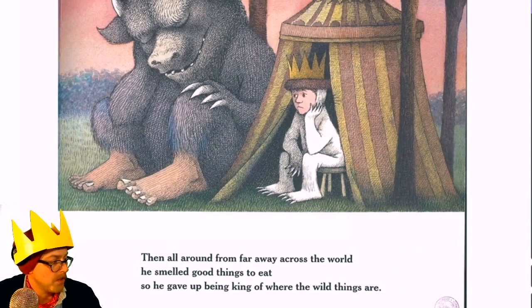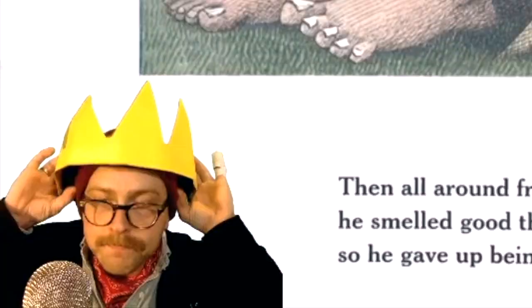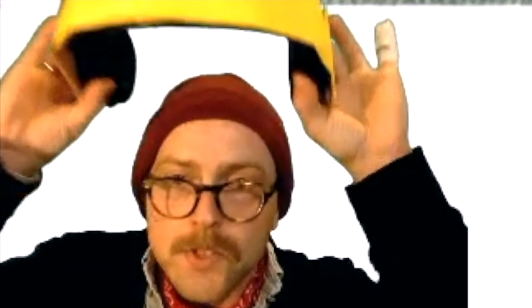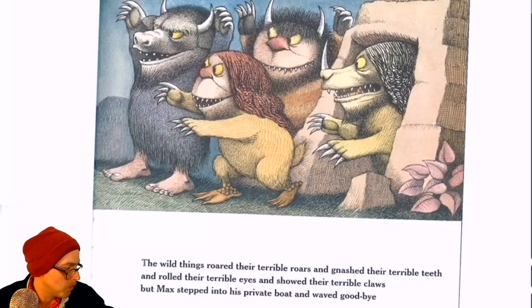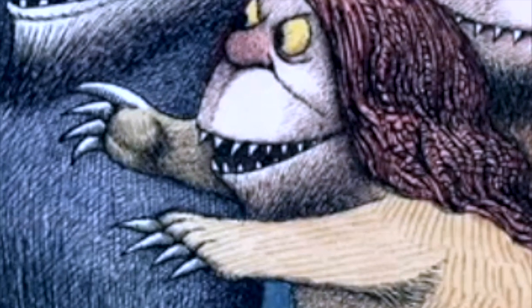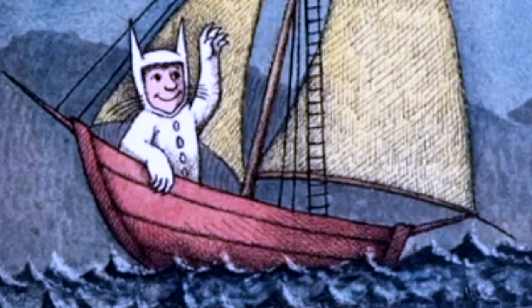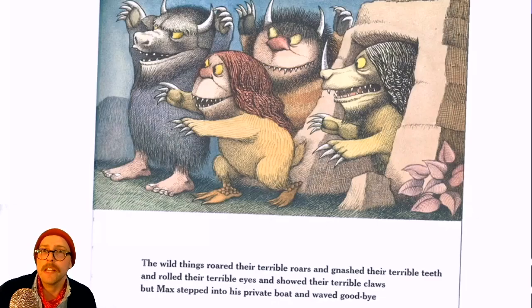Eventually he smells good things to eat, so he gave up being king of where the wild things are. This isn't what he wants, and he starts to follow his nose the way back home. It looks like Max is just fine with his decision — he's waving off. The wild things roared their terrible roars, gnashed their terrible teeth, rolled their terrible eyes, and showed their terrible claws. But Max stepped into his private boat and waved goodbye. All these things are still bad about them, but Max is able to wave goodbye feeling differently than he did when he first approached that island.